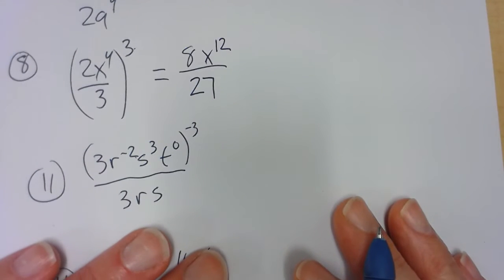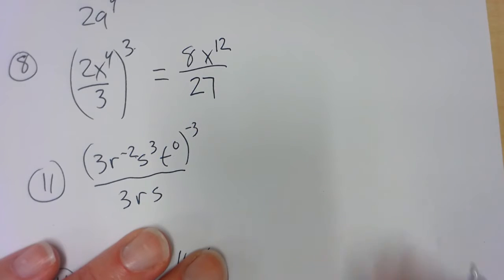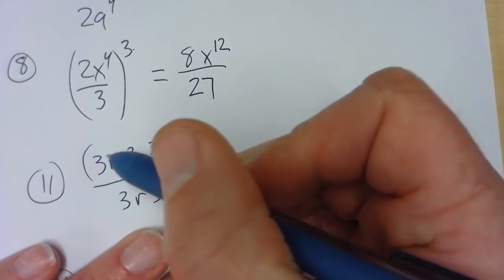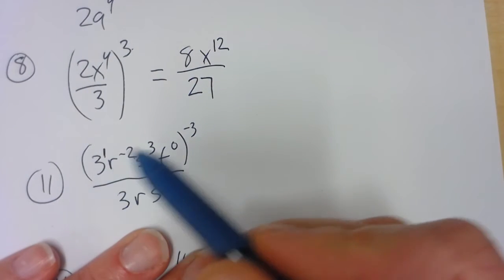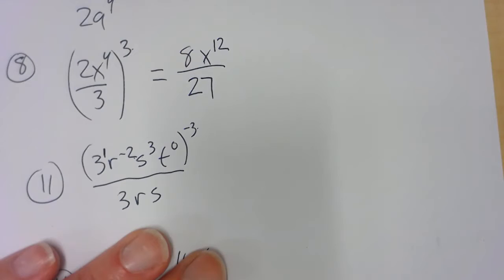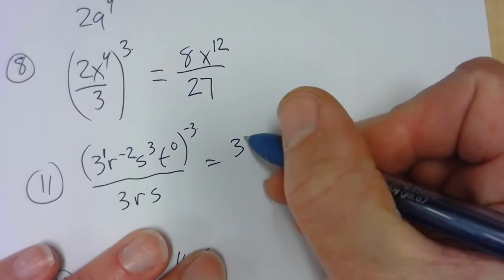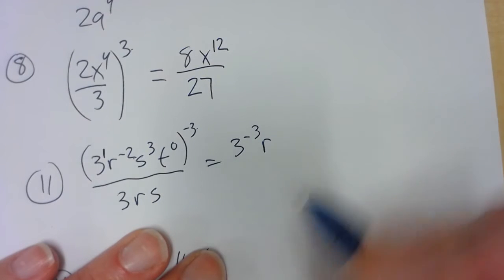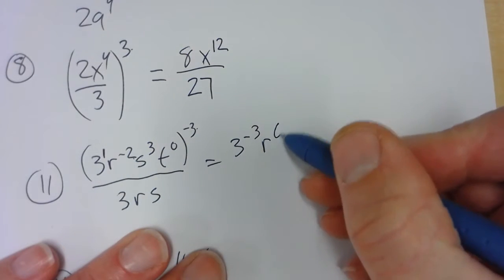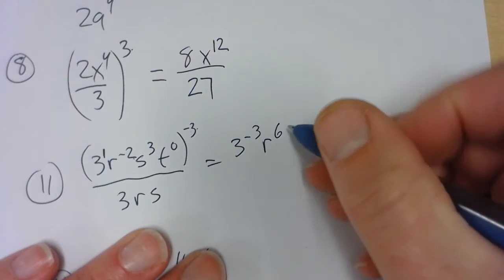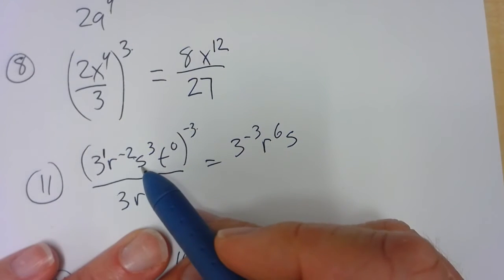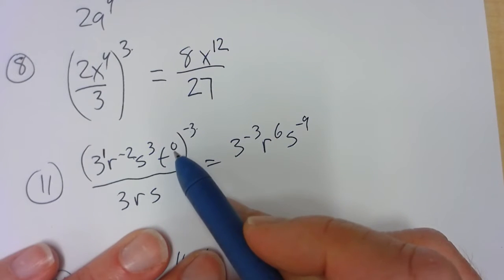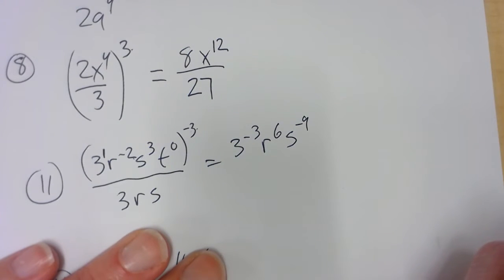The next one looks like a bit of a hot mess, but I'm just going to go through it one step at a time. I'm going to do 3 to the negative 3rd — there's an invisible 1 right there. When you have an exponent raised to an exponent, you multiply, so it's 3 to the negative 3. Exponent to exponent, you multiply: so it's r to the 6th, s to the negative 9. And then t to the 0 is 1, so it disappears and gets absorbed into the problem.